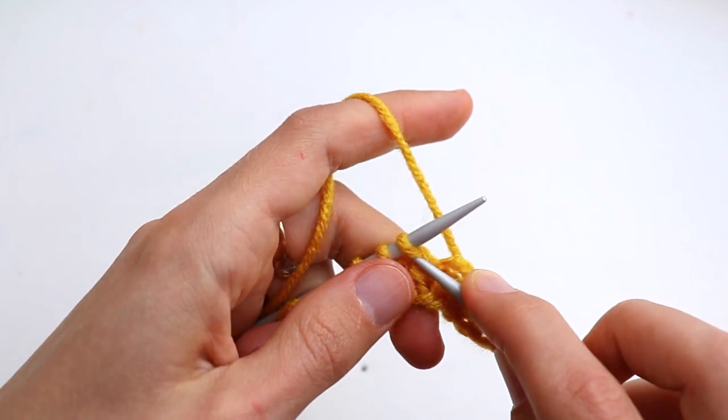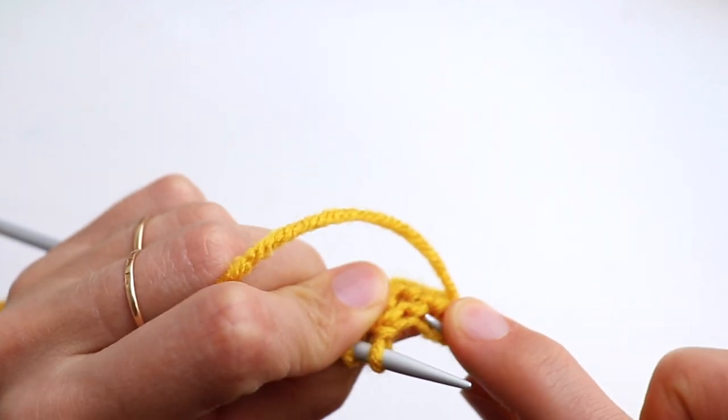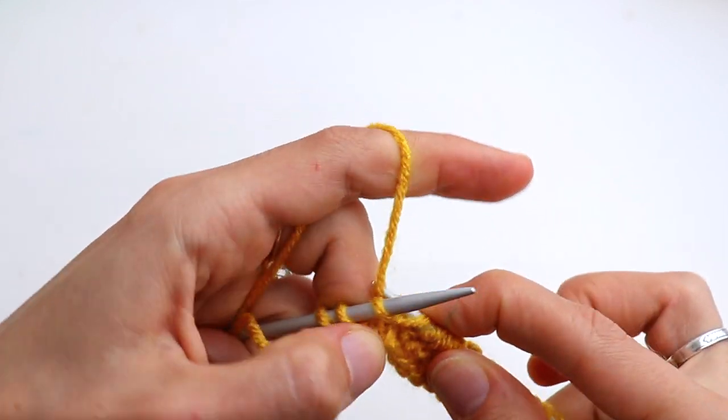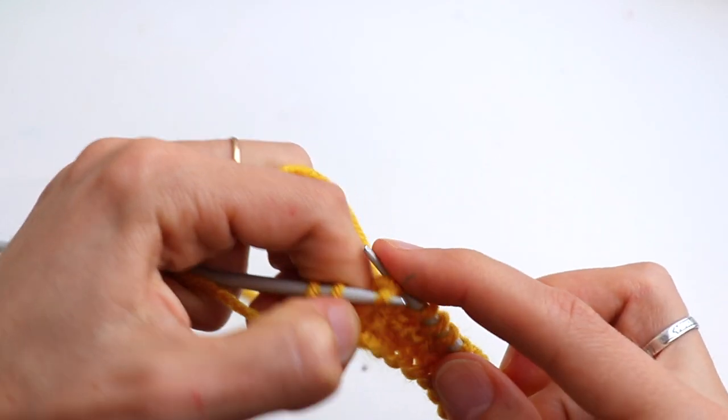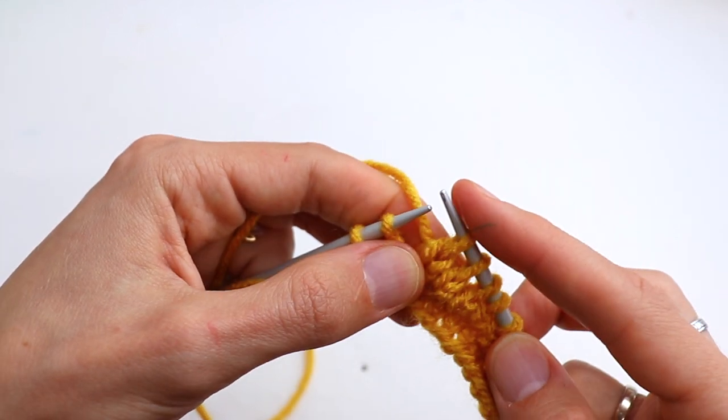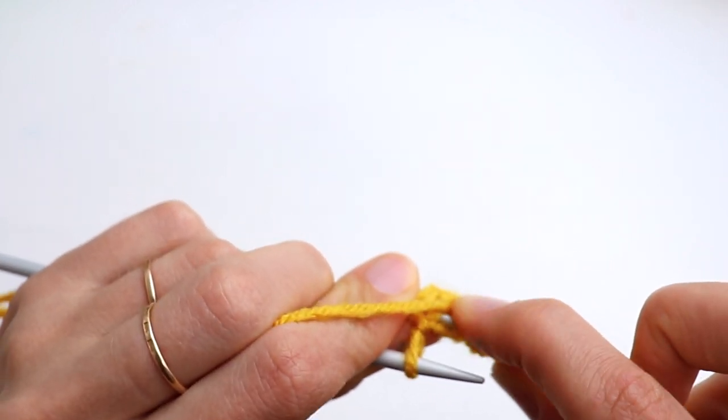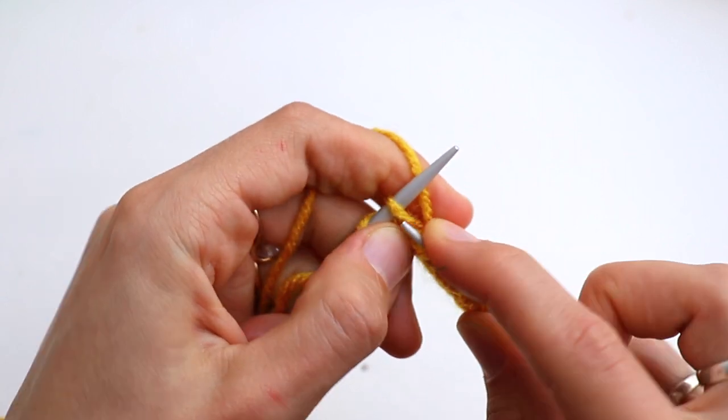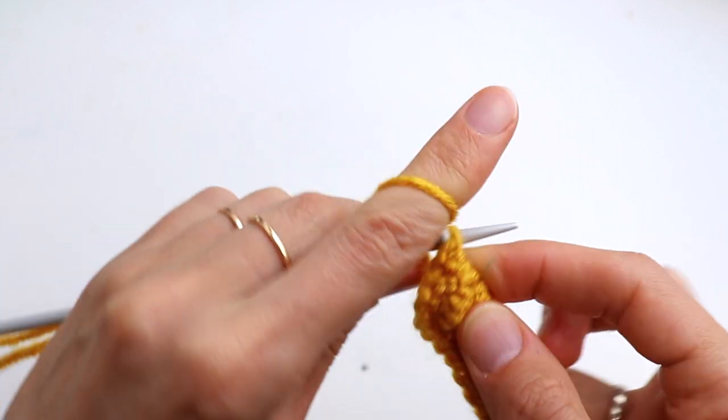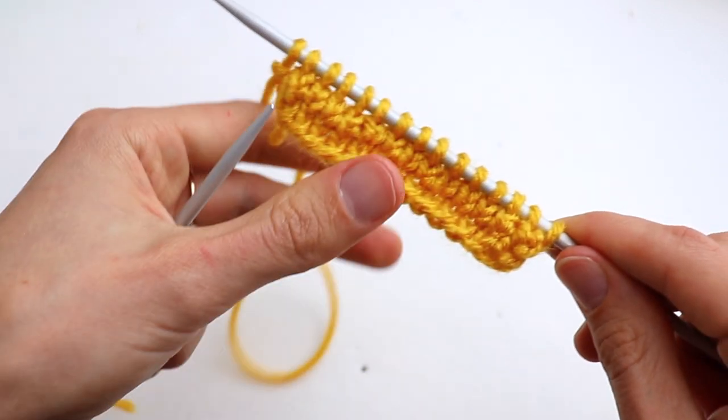And knit it and pass over. And the last one: knit one, pass over. And purl the last selvedge stitch. That's it. Look at this edge.